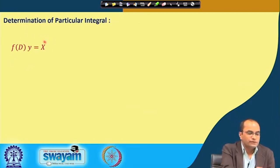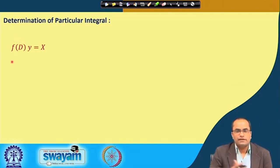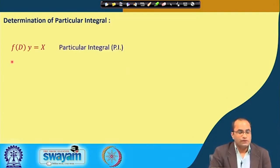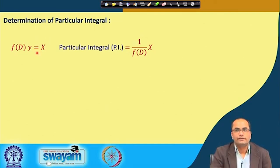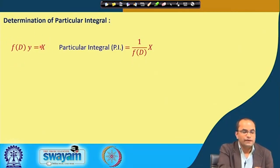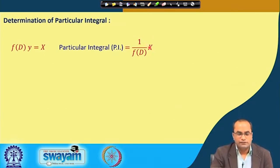The given differential equation written in operator form is f(D)y = X, where X is a function of x and f(D) has been discussed in the previous lecture. The particular integral of this equation is denoted as (1/f(D)) operated on X. This 1/f(D) is the inverse operator which we apply to get y = (1/f(D))X, and we will see how to operate 1/f(D) on the function X.